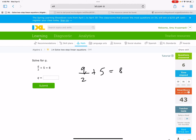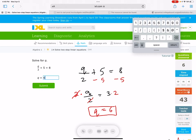I see Q is being divided by two and is also being added to five. So I can subtract five on both sides. So I have Q over two equals three. And then I see division. So I can multiply by two on both sides. And we get six. Beautiful.